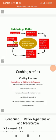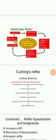The next reflex is Cushing's reflex, which is very important to protect the vital centers of the brain from ischemia. When the arterial blood pressure is increased above the intracranial pressure, this enables more blood flow to the brain and relieves the effects of ischemia. In this reflex, hypertension and bradycardia are observed.